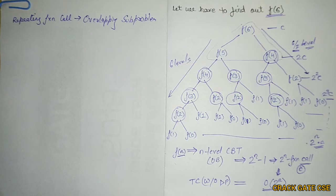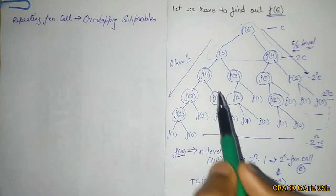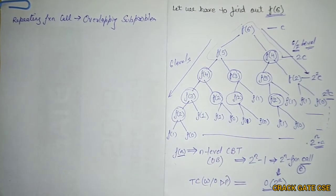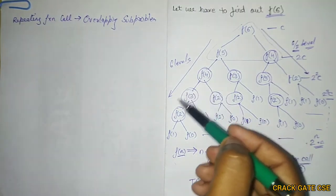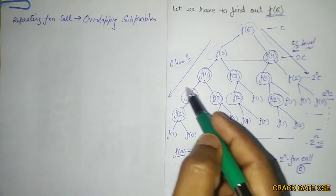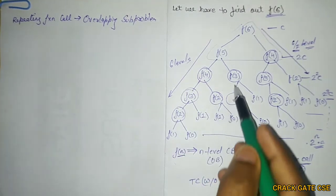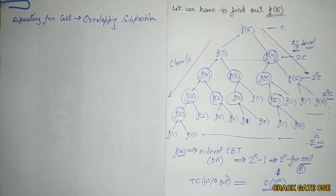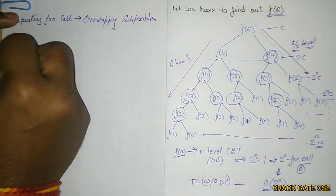Since we are getting the same functions again and again, there is no need to execute F(3) or F(4) three times. We can execute each once and save the result in a table for later reference. This is the idea behind dynamic programming: execute only the distinct function calls and store those values in a table or data structure for later reference.